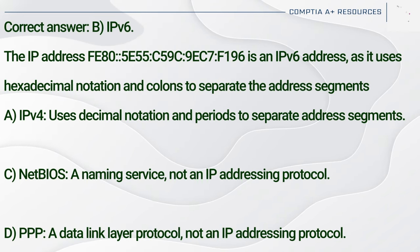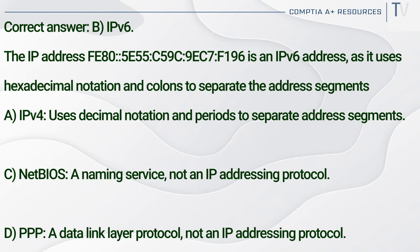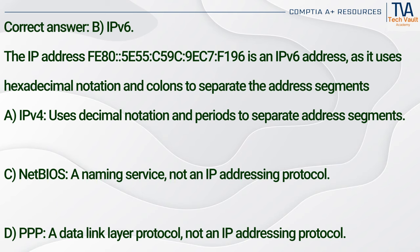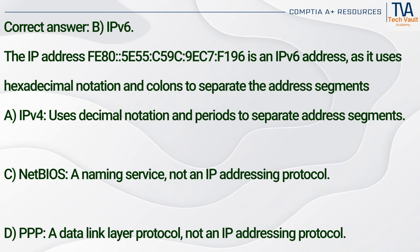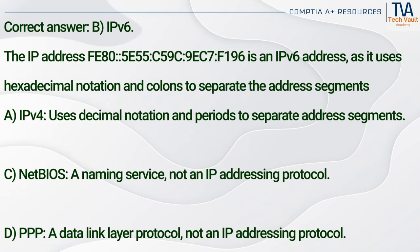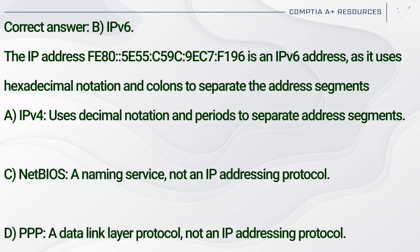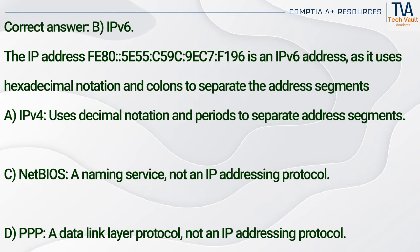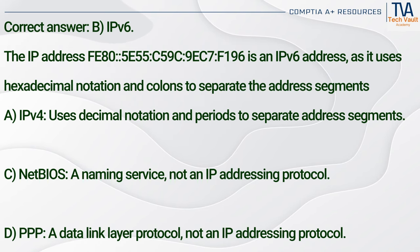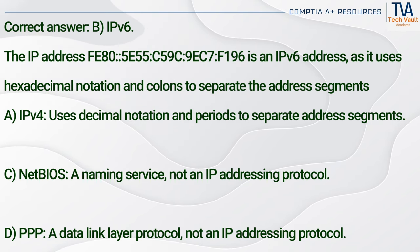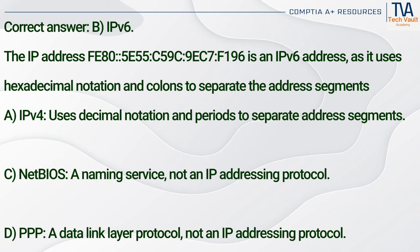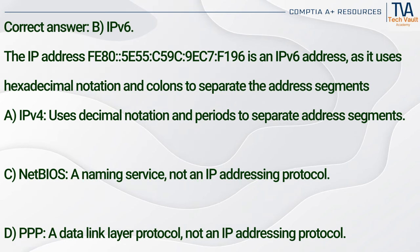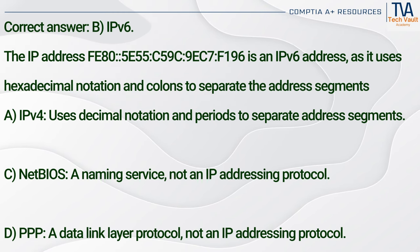Correct answer: B. IPv6. The IP address FE80::5E55:C59C:9EC7:F196 is an IPv6 address, as it uses hexadecimal notation and colons to separate the address segments. IPv4 (A) uses decimal notation and periods to separate address segments. NetBIOS (C) is a naming service, not an IP addressing protocol. PPP (D) is a data link layer protocol, not an IP addressing protocol.